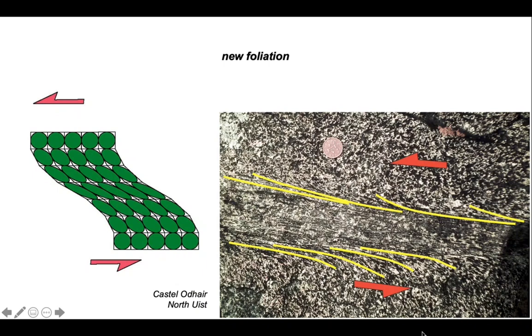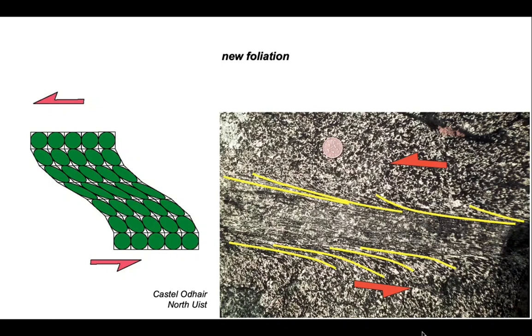The new foliation starts off at an angle of about 45 degrees and then swings in to the shear zone. The new fabric initiates at 45 degrees.